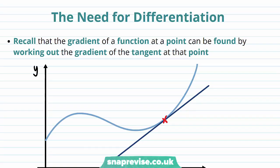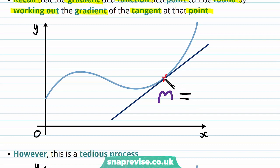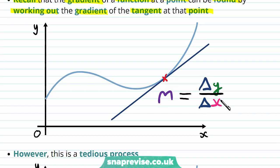So why exactly do we need this process called differentiation? The gradient of a function at a point can be found by working out the gradient of a tangent at that point. Let's suppose we have our function f(x) and we choose a single point and draw the tangent to the curve at that point. Then the gradient of that function is the same as the gradient of the tangent, written as m. We can calculate this by finding two points on the tangent — one already on the curve where they touch, and one other point — and calculate the change in y divided by the change in x.